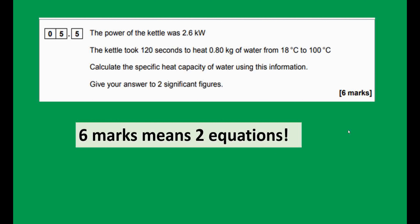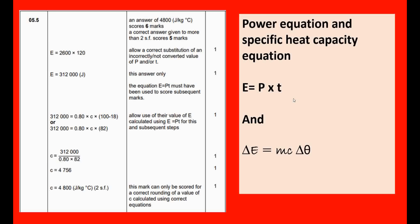Another six-mark question: use energy equals power times time, then energy equals mass times specific heat capacity times change in temperature. Again, you earn a mark for converting to two significant figures. Giving the correct answer to more than two significant figures only gives five marks. Using the numbers from the question correctly will still get you marks even if you make other errors.